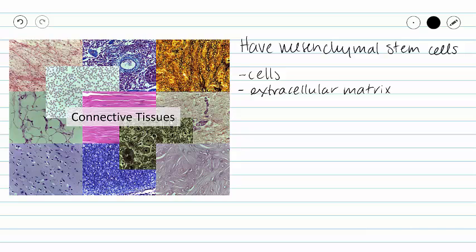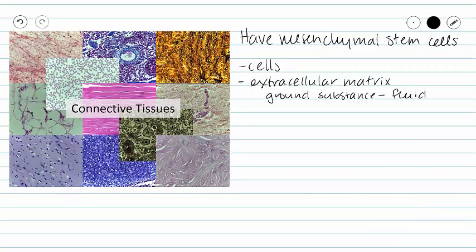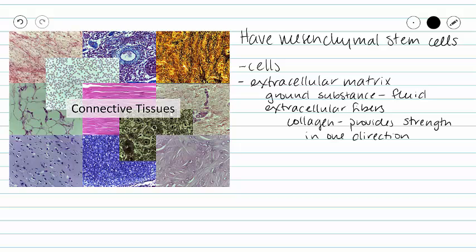Our extracellular matrix has two components itself. Ground substance is the fluid component of extracellular matrix, and then we have our extracellular fibers. We have three different types: collagen provides strength in one direction, elastic fibers provide stretch and recoil, and reticular fibers create a branching network that provides strength in many directions.